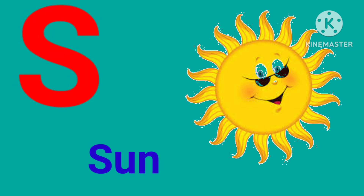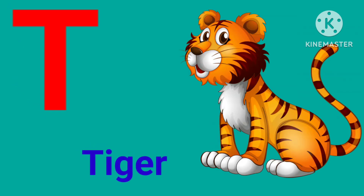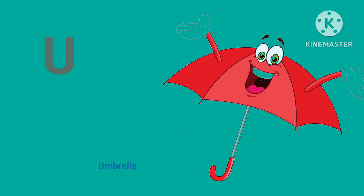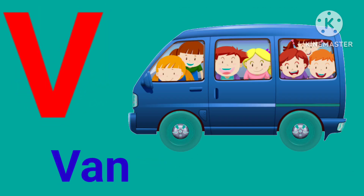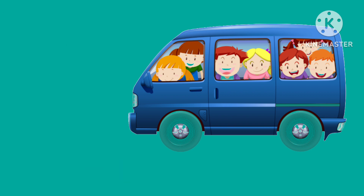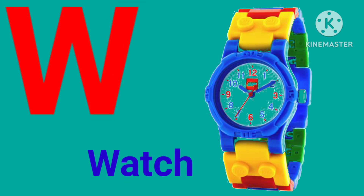S for sun, T for tiger, U for umbrella, V for van, W for watch.